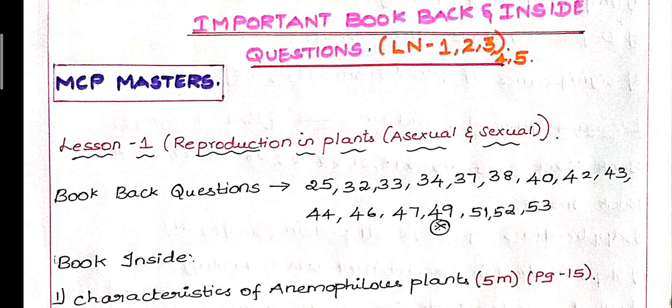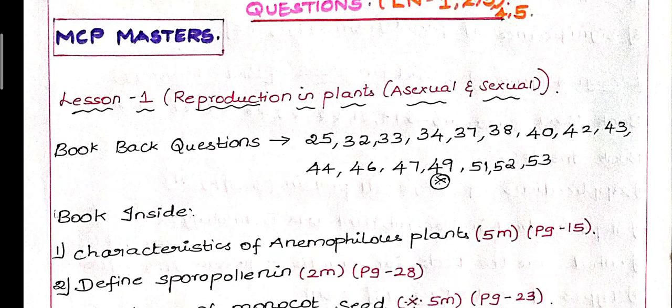First lesson: Reproduction in plants, that is asexual and sexual reproduction in plants. The book back is very important: 25, 32, 33, 34, 37, 38, 40, 42, 43, 44, 46, 47, 49, 51, 52, 53. Maximum, there are 5 or 6 questions. We will meet the book back. You can learn the book inside.